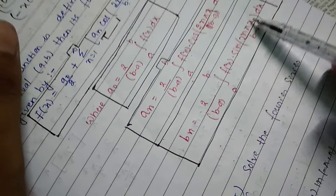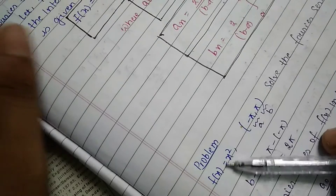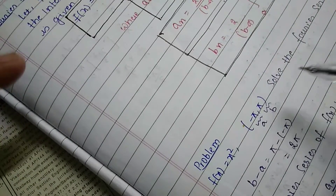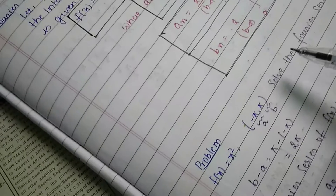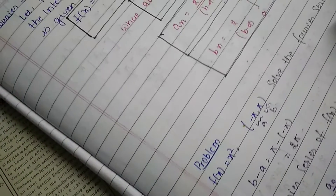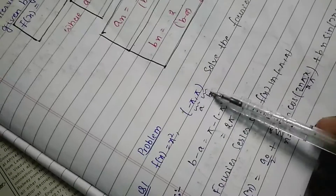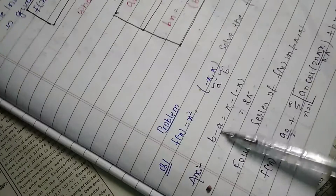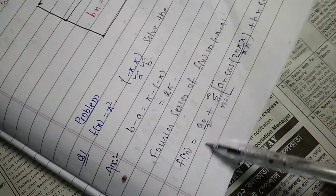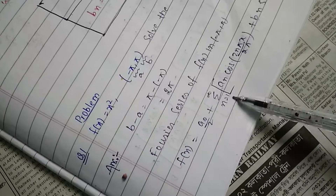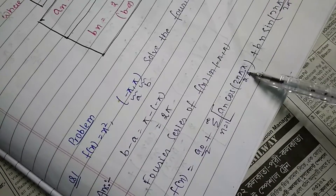A famous example from engineering college exams: f(x) = x² on [-π, 2π]. Here b - a = 2π. We substitute into the Fourier series formula: f(x) = a₀/2 + summation from n=1 to infinity of [aₙ·cos(2nπx/2π) + bₙ·sin(2nπx/2π)].